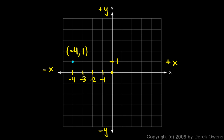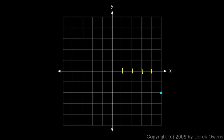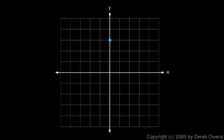Here's example 3. This point is 3 to the left, so x is negative 3, and it's 4 down, so y is negative 4. This is the point (-3, -4). In example 4, we have a point that is 5 in the positive x direction — counting 1, 2, 3, 4, 5 to the right — and then 2 in the negative y direction, so x equals 5 and y equals negative 2. That point is (5, -2).